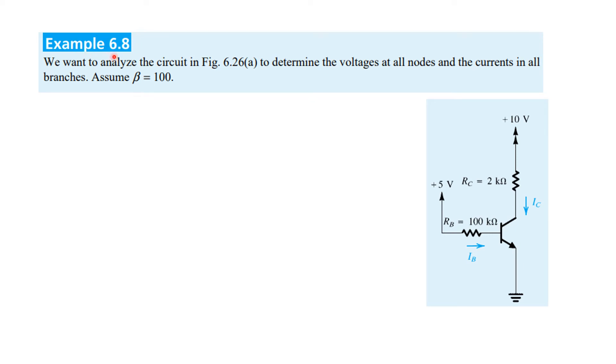Let's see Example 6.8. We want to analyze the circuit in Figure 6.26a to determine the voltages at all nodes—that means VB, VC, VE, etc.—and the currents in all branches (IB, IC, IE). Assume that β = 100.